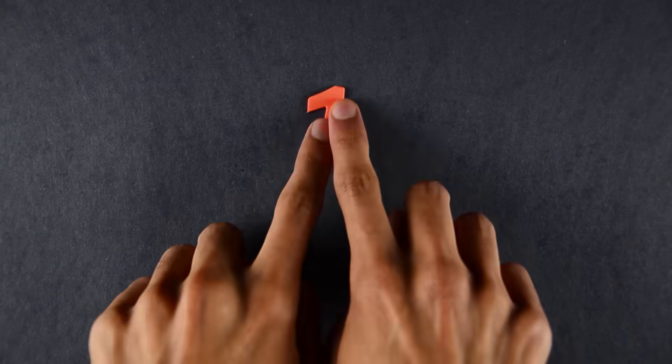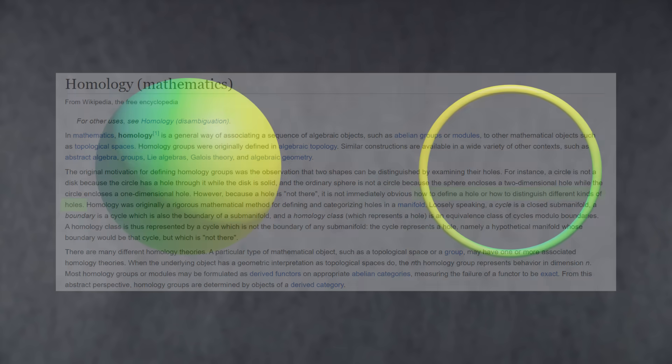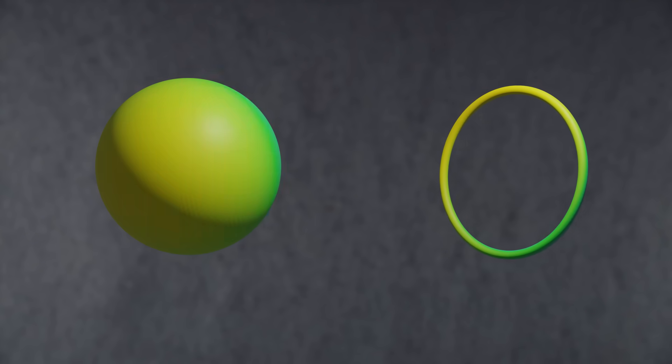Homology answers two questions. How do you define what a hole is? And how do you distinguish between different types of holes? For example, consider a circle and a sphere. They both have a hole, but the hole in the sphere is qualitatively different from the hole in the circle. It seems higher dimensional in some sense. How do we make this precise?